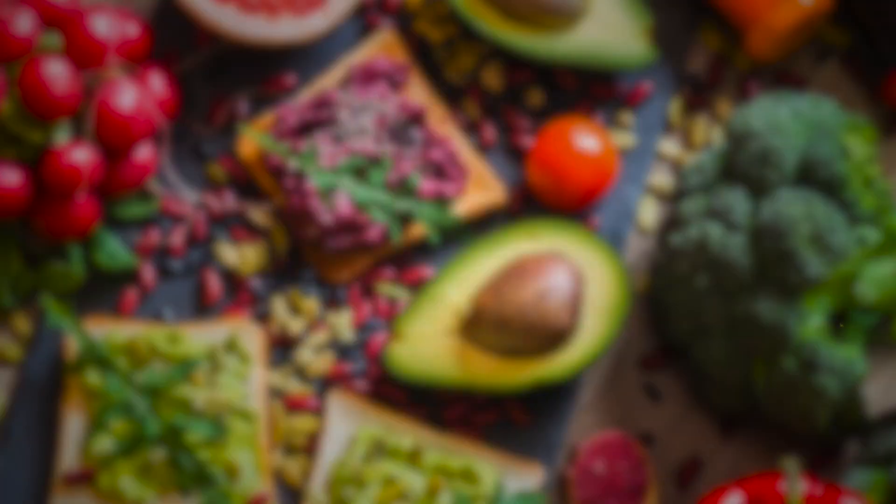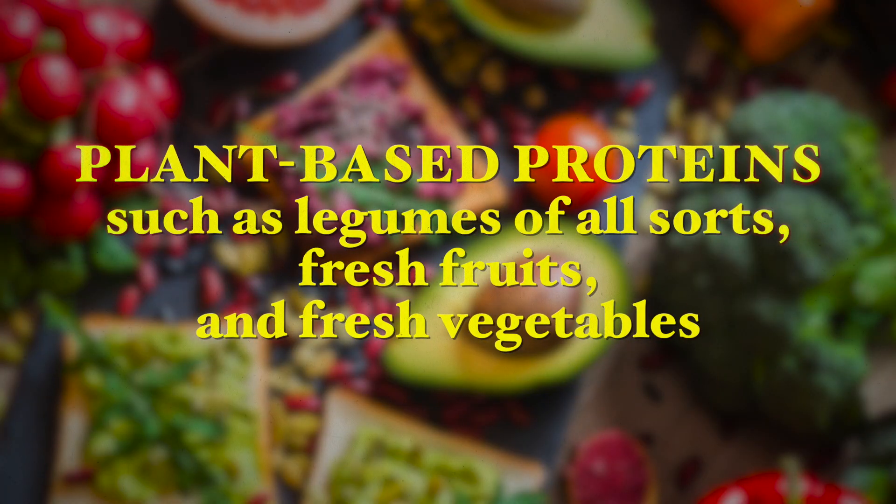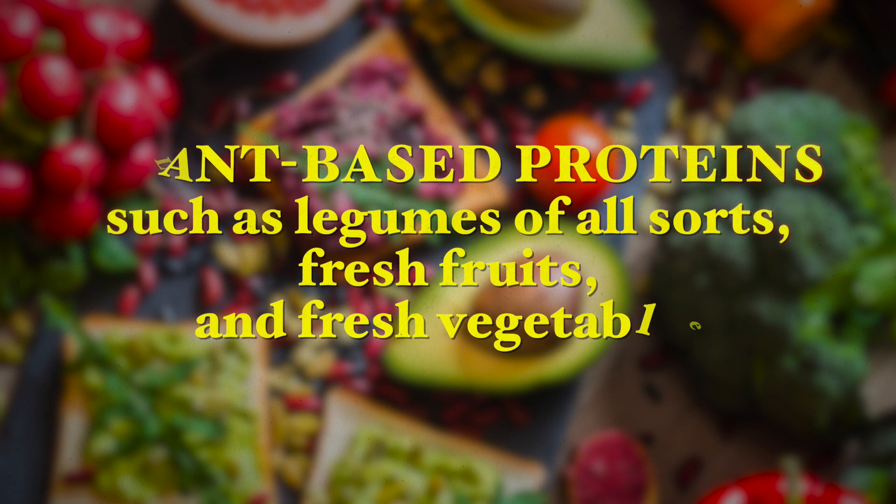A healthier diet rich in natural plant-based proteins such as legumes of all sorts, fresh fruits, and fresh vegetables will help prevent endotoxin exposure and lead to an overall healthier body and life. I hope this video was helpful — if it was, please give it a thumbs up.